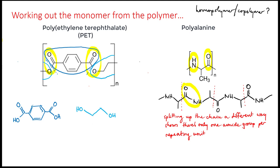Once you've done that and you think you have the correct monomers, cover up the original polymer structure and try the reverse process — what do you get if you join those two monomers together? Whatever you draw should match the original polymer. For the polyalanine, since we know it was made from a single type of monomer, it must have had an acid on one end and an amine on the other, so it's just a matter of recreating those end groups. As with the copolymer, it's worth doing the reverse exercise and checking that when you try to make a polymer from your newly drawn monomer, it matches the original polymer structure.